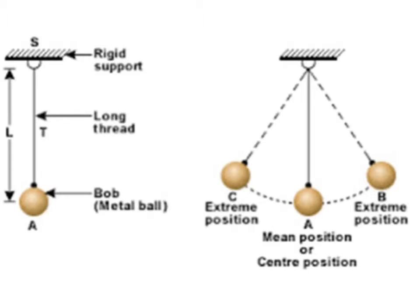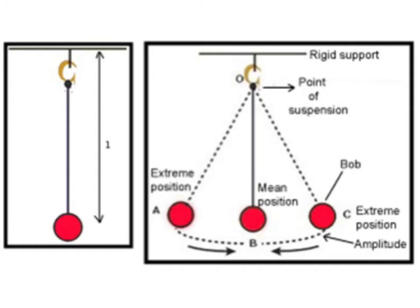To understand these properties we will take an example of simple pendulum. A simple pendulum consists of a ball or bob hanging from a thread. When we push the bob,